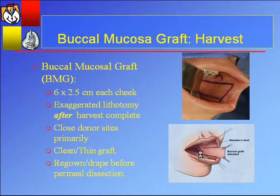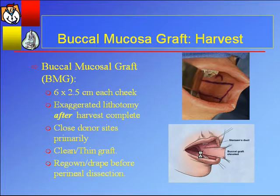How is it harvested? The graft is usually taken from the inside of the cheek, marking the Stensen's duct because that's the main drainage for the parotid gland — injury can result in post-op parotiditis. Use an outline of 2.5 cm by 6 cm segment on each cheek. Donor sites can generally be closed primarily, but if not, you can leave them open with no problem. It's important to thin the graft down to the white lamina propria. Once the harvest is done, repress the perineum and start the urethral dissection. Hemostasis in the mouth — bipolar cautery works very well.